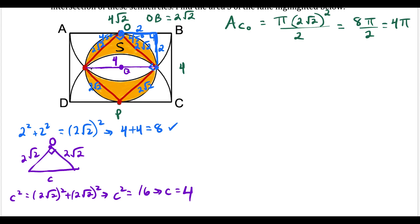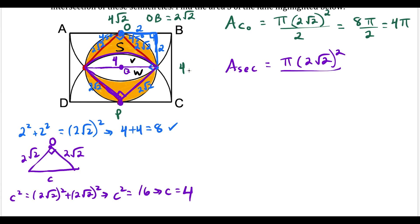Now I want to focus on this sector of our semicircle down at point P — I'll draw in this sector in purple — and that's going to help us find the area of these two regions. I'll call them region V and region W. The area of that purple sector: this is a 90-degree angle because we have a square on the inside, and the radius is still two square root two. Since 90 degrees is one-fourth of a full 360-degree circle, I divide by 4. That gives us pi times eight over four, which equals two pi.